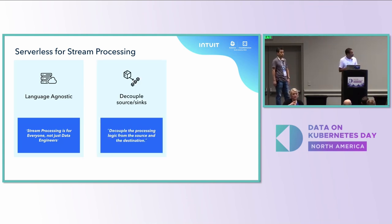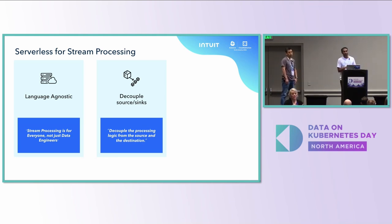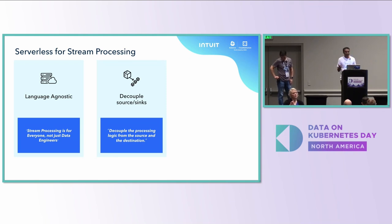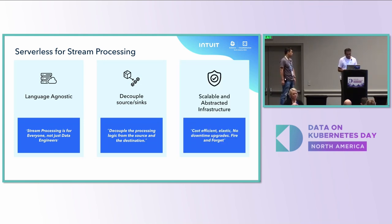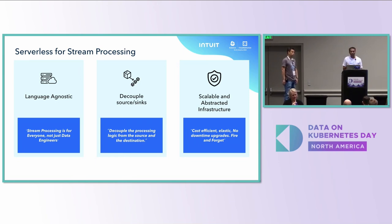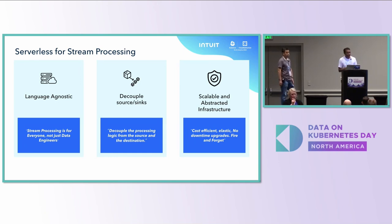Second is decoupling sources from sinks. Users are more interested in the payload rather than where they got it from. Nobody cares whether the data came from Pulsar, SQS, SNS, or an HTTP endpoint — the business logic is with the data. Lastly, we wanted scalable and abstracted infrastructure, meaning we don't want users to worry about scaling. It should auto-scale by itself no matter how complex your processing graph is, with queue-depth analysis and infrastructure that is very close to fire-and-forget.